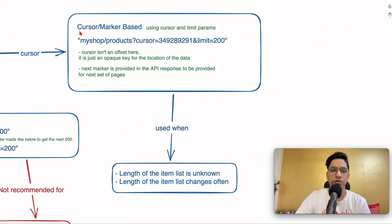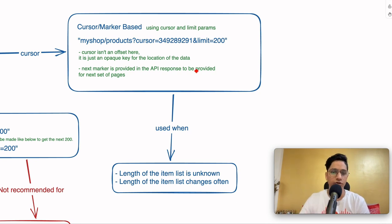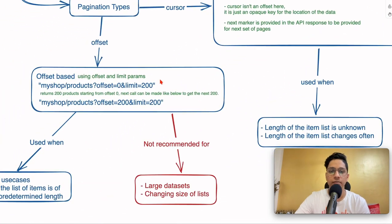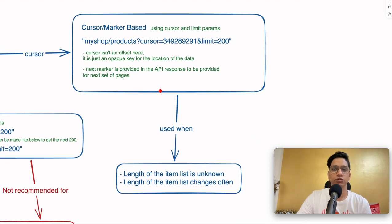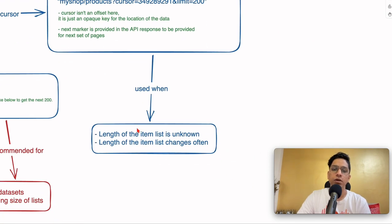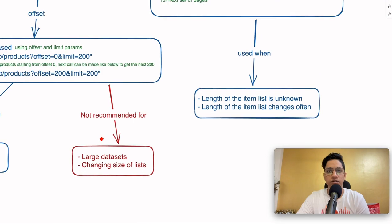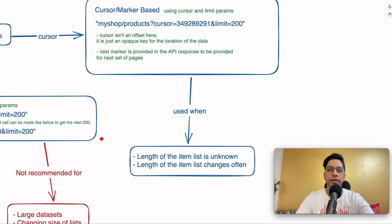The other type is cursor-based pagination, also known as marker-based pagination. Instead of an offset it uses a cursor — just a pointer to the current page or start of the page. A cursor isn't an offset; it's an opaque key for the location of the data. The next marker is provided in the API response, since clients can't calculate it like they can with an offset. Cursor-based pagination is very useful when the length of the item list is unknown or changes often, so you don't have to deal with static offsets.